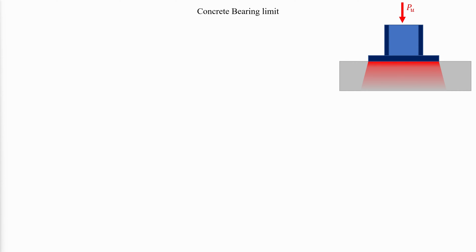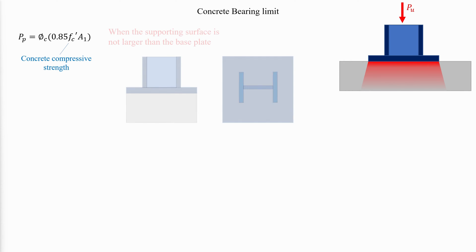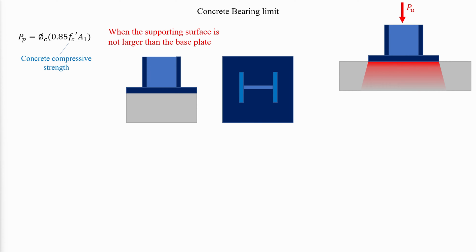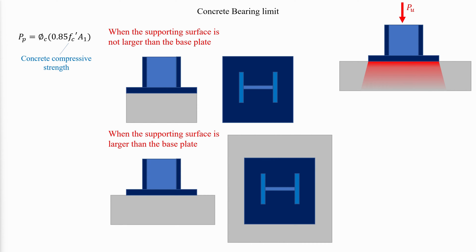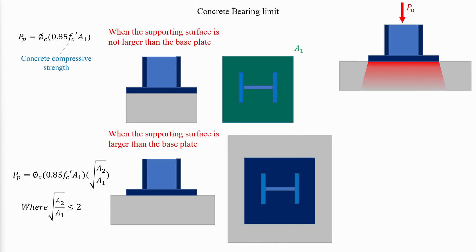The design bearing strength on concrete is defined in ACI 318 section 10.17. When the supporting surface is not larger than the base plate, and when the supporting surface is wider on all sides than the base plate, the design bearing strength is permitted to be multiplied by a factor, where A1 is the area of the base plate and A2 is the maximum area of the portion of the supporting surface that is geometrically similar to and concentric with the base plate area. The resistance factor phi is equal to 0.65.